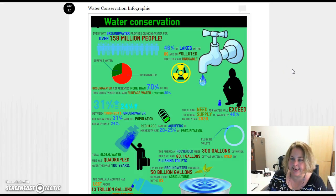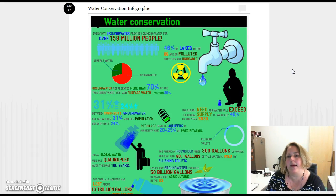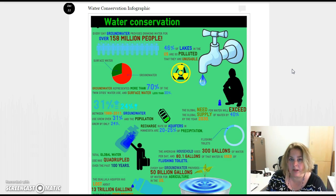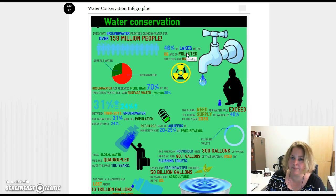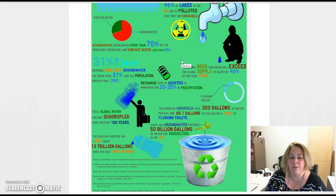The next tool is Easel.ly, and Easel.ly is an infographic creator. With infographics, you don't bring in a lot of your own pictures, although you can. You use a lot of silhouettes and graphs and things like this. An infographic is mostly about the statistics — that's what drives it. Here's an example of one actually made in Easel.ly, and you can see the citations at the bottom of that one even.